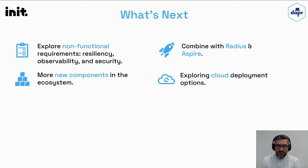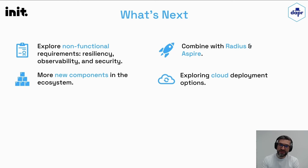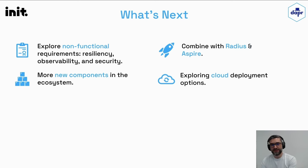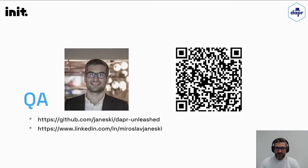What's next? We will explore more non-functional requirements like resiliency, observability, and security before we decide to move to production with the DAPR version. There are new components coming to the ecosystem like the OpenAI component that we'd like to utilize. I'm curious to combine DAPR with Radius and Aspire — there's already a session on this at the conference. We'd also like to explore cloud deployment options; we tried Azure Container Services and noticed a difference in the component format. If you have questions, feel free to reach out via LinkedIn or email. The source code is on my GitHub. Thank you very much.